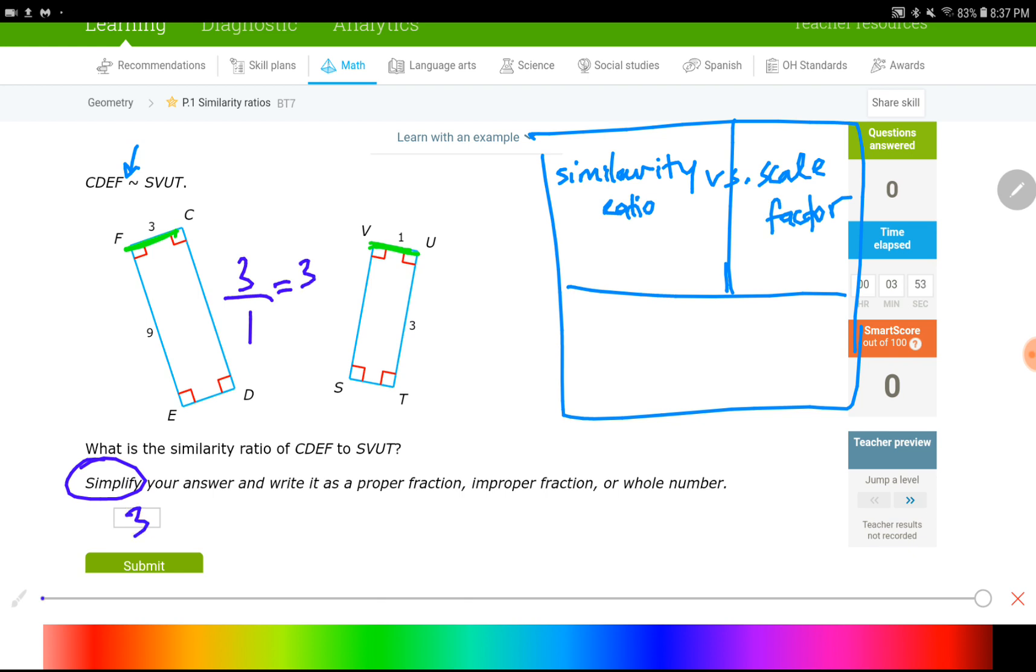Because this question is about the similarity ratio. If it was asking for the scale factor, I would put 1 over 3. Here is why.